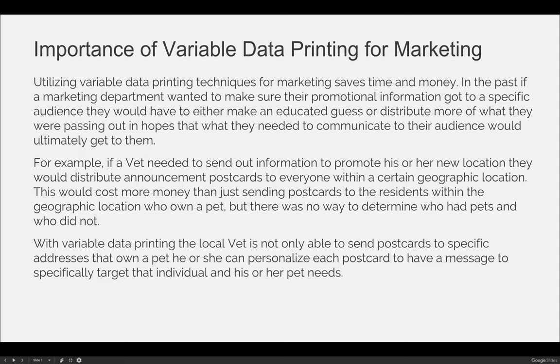In the past, if a marketing department wanted to make sure their promotional information got to a specific audience, they would have to either make an educated guess or distribute more of what they were passing out in hopes that it would ultimately reach that audience. For example, if a vet needed to send out information to promote a new location, they would distribute announcement postcards to everyone within a certain geographic location. This would cost more money than just sending postcards to residents who actually own a pet.